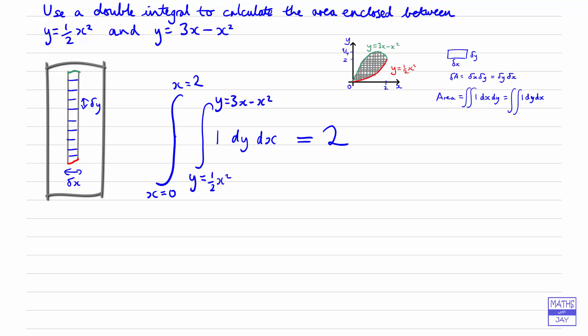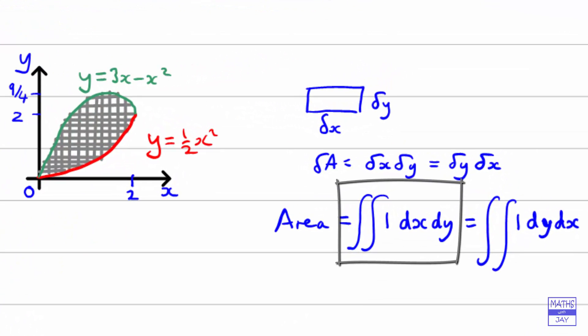Now this method we looked at last time is the best way of using a double integral to find this area, but for those of you who want to see that it could be done the other way around, stay with me. If you haven't seen the other video, go and watch that first — you may well decide you're happy with that and don't want to bother with the alternative. But if you're up for a challenge, let's have a look at how it works the other way around.